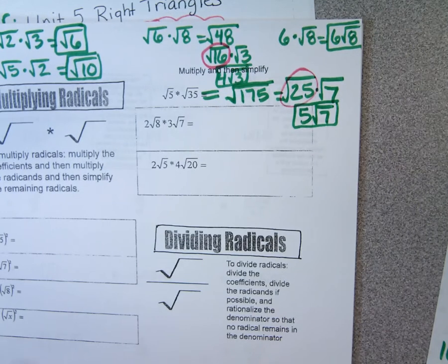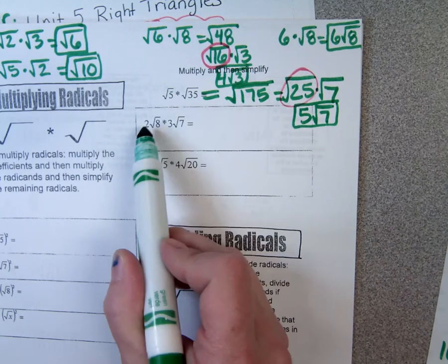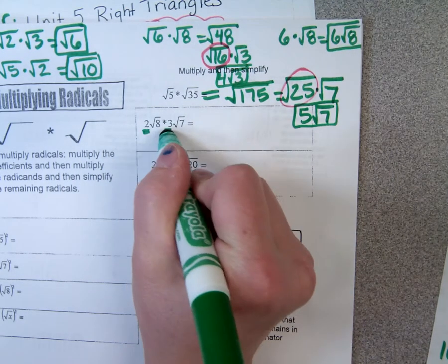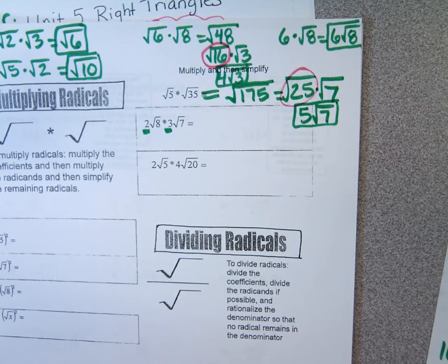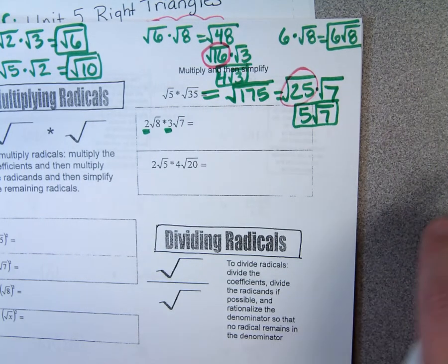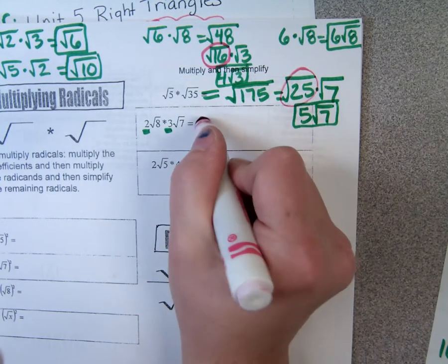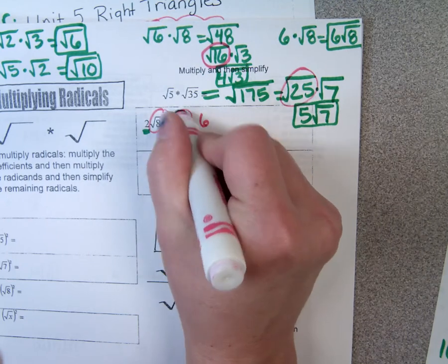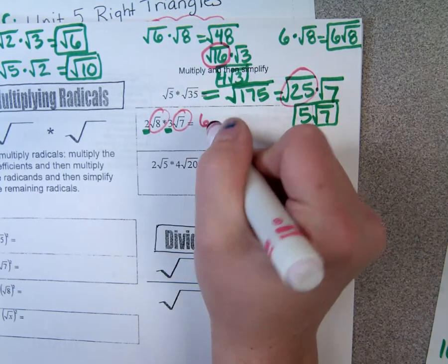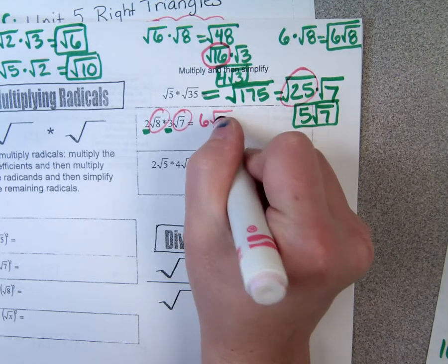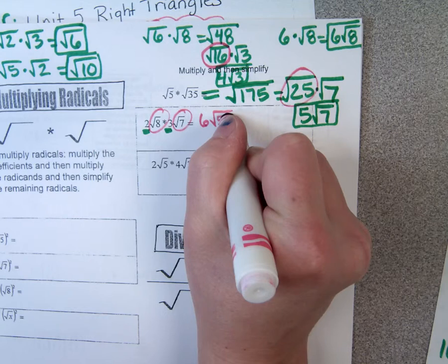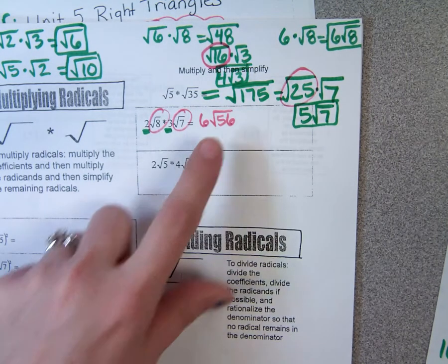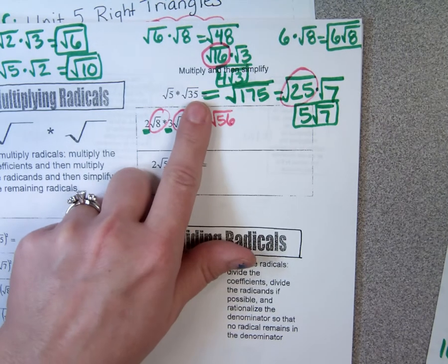In this next section, I have numbers outside and inside the radicals. First I do the outside numbers: 2 times 3 is 6. Then I multiply the square roots: square root of 8 times square root of 7 is square root of 56. The only thing you ever try to break down is something that's under a radical, so ignore the 6 out front. Let's pay attention to that 56.